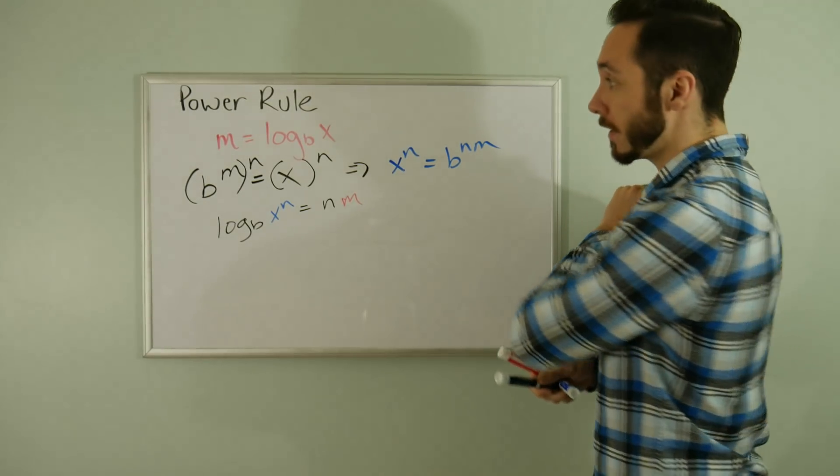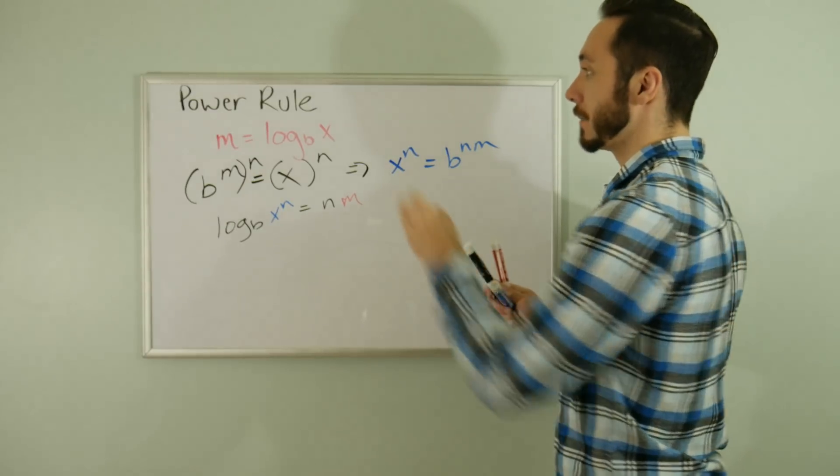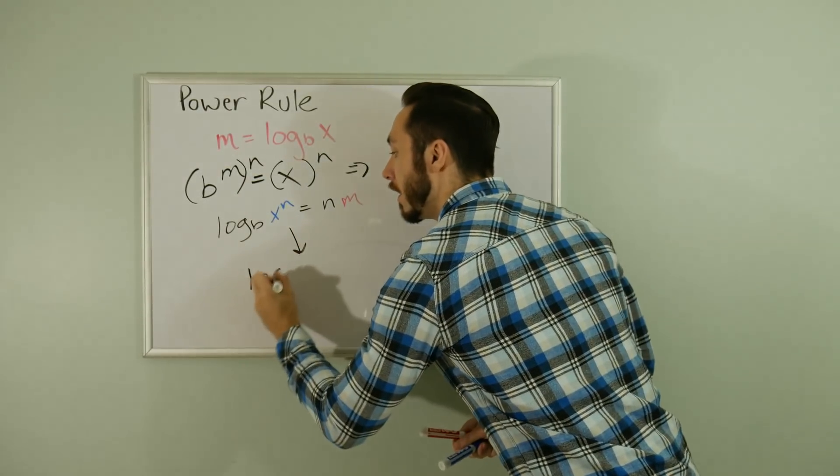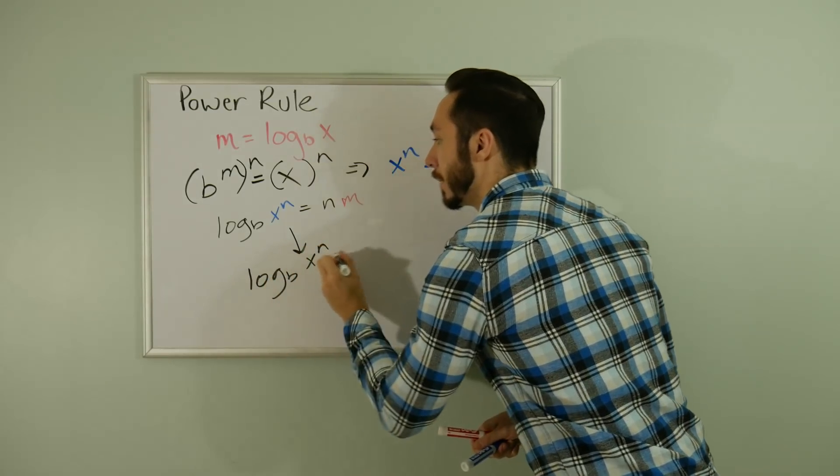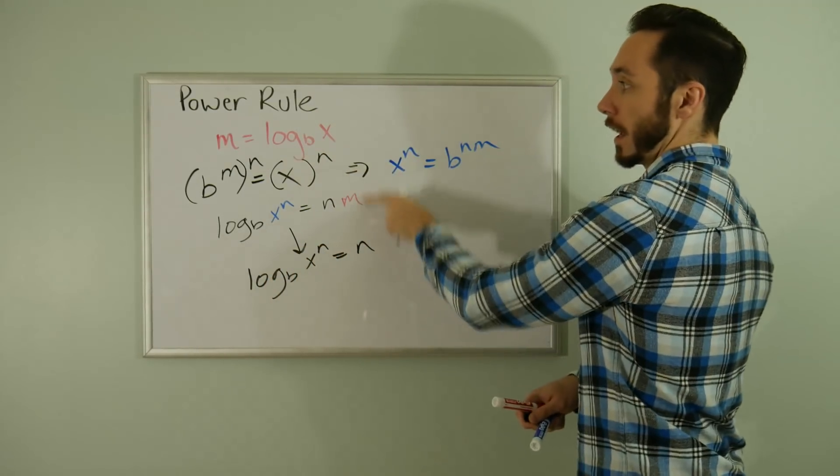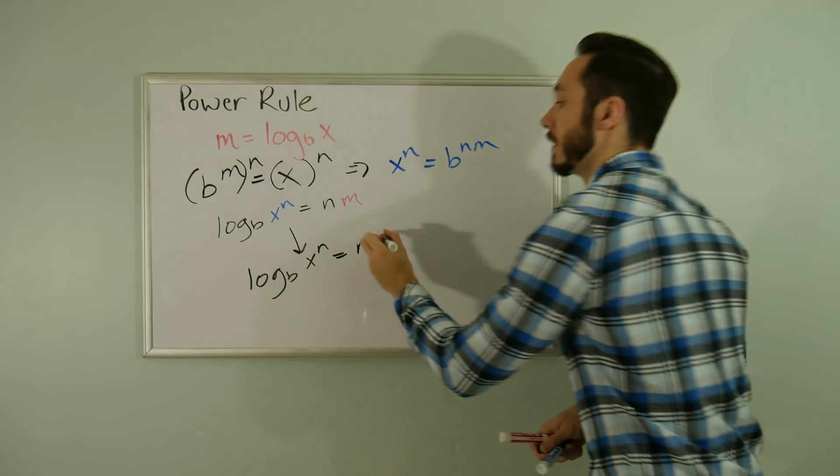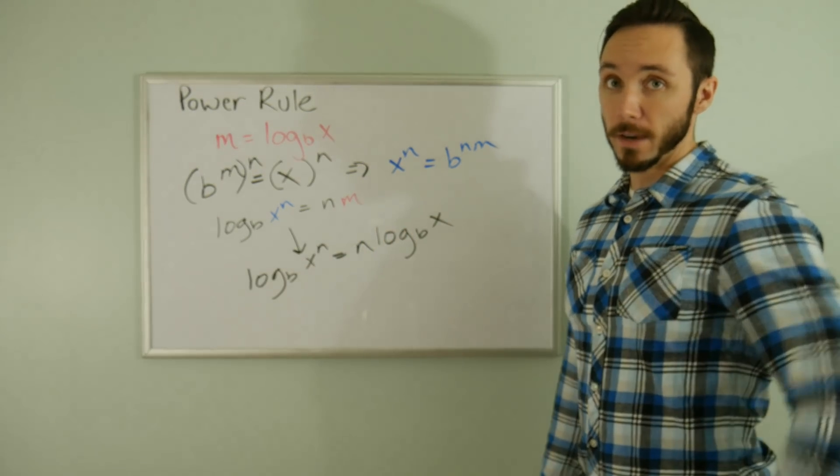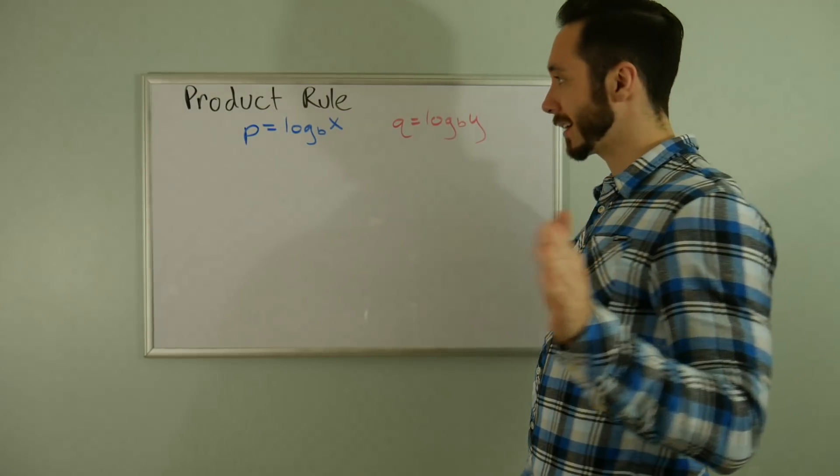M equals log base B of X, so I'm going to substitute that in. I'll get log base B of X to the nth power equals N times log base B of X. Power rule down!